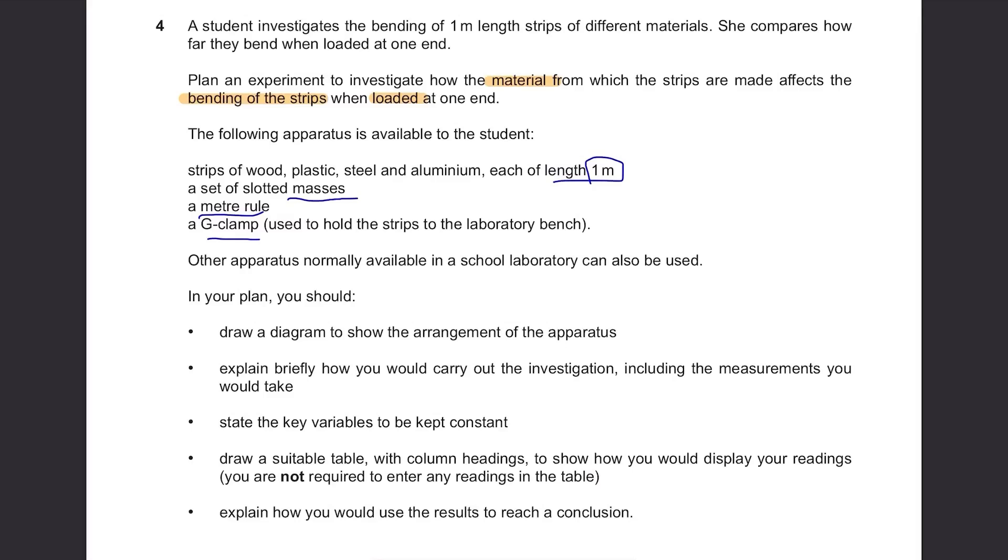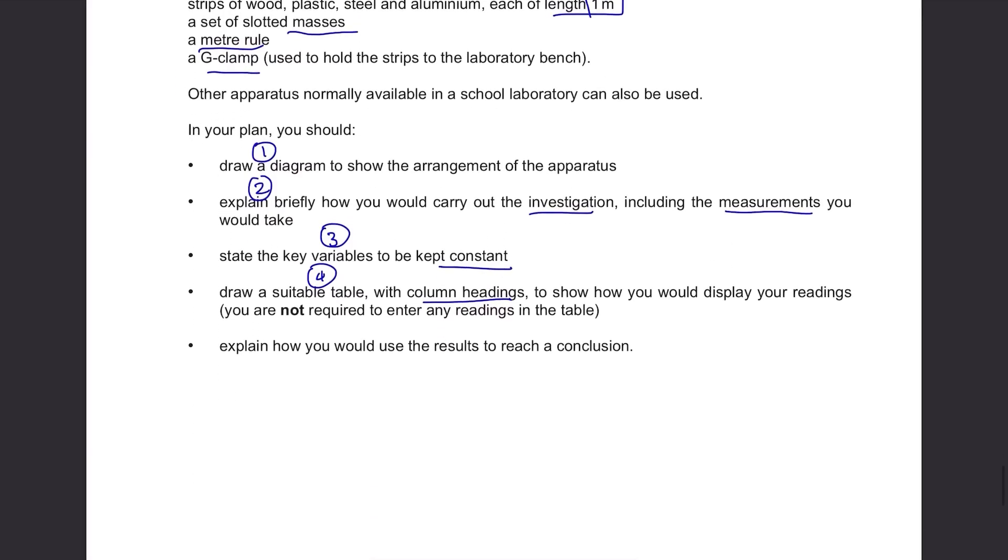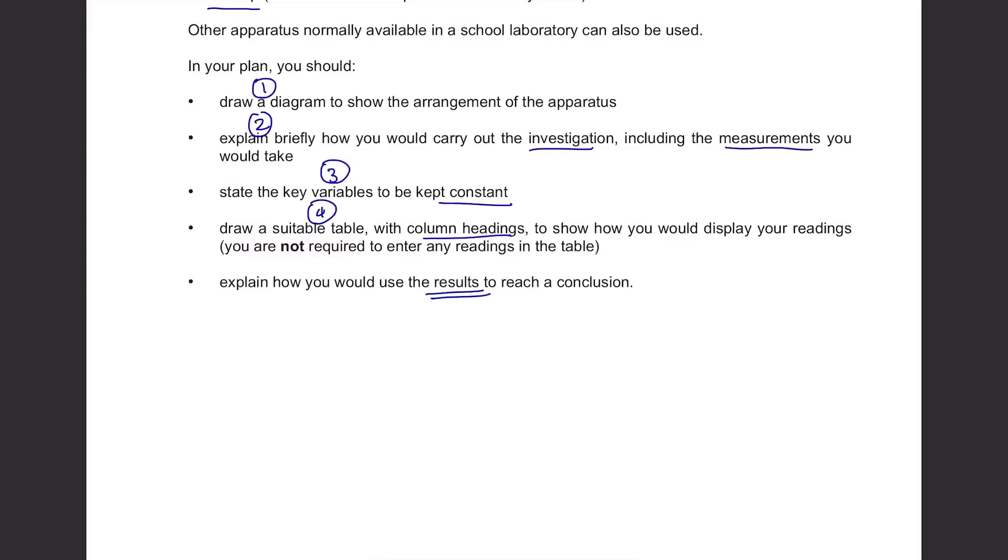In your plan, you should draw a diagram to show the arrangement of the apparatus. Explain briefly how you carried out the investigation, including the measurements you take. State the key variables to be kept constant. Draw a suitable table with column headings to show how you'd display your readings. You're not required to enter any readings in the table. Explain how you'd use the results to reach a conclusion.